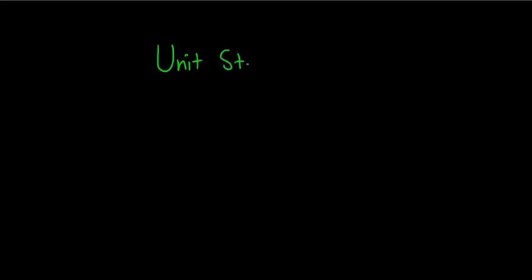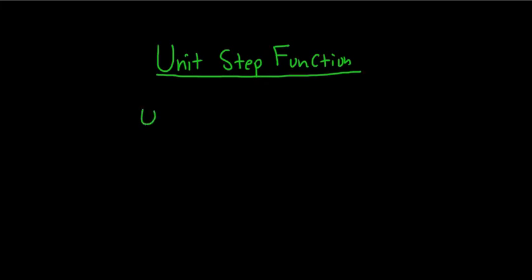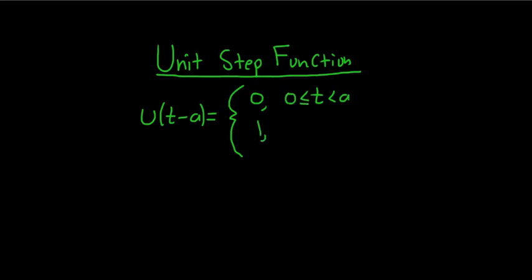In this video, we're going to talk about the unit step function. We're going to define it as a piecewise function. So u of t minus a is defined as 0 if t is less than a and greater than or equal to 0, and it's 1 if t is greater than or equal to a.